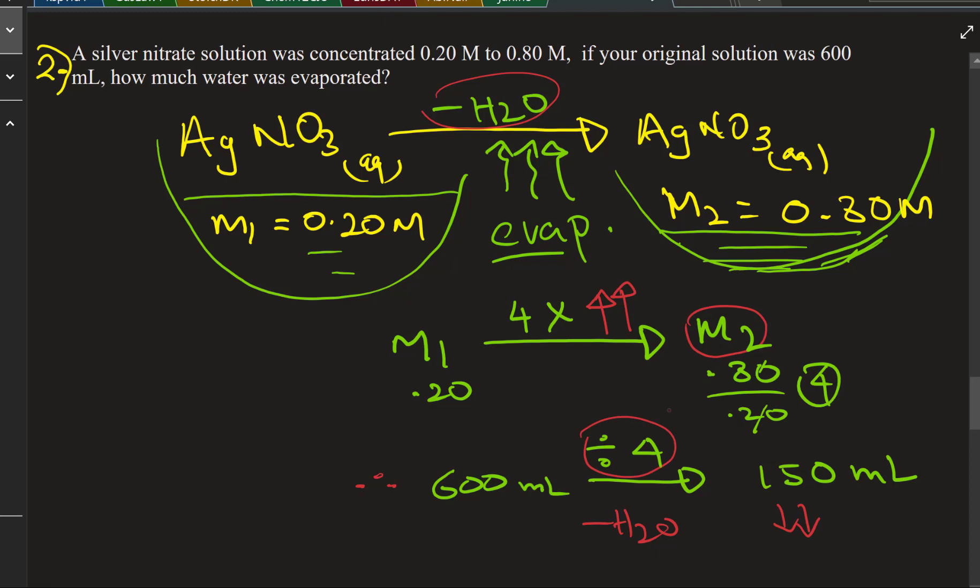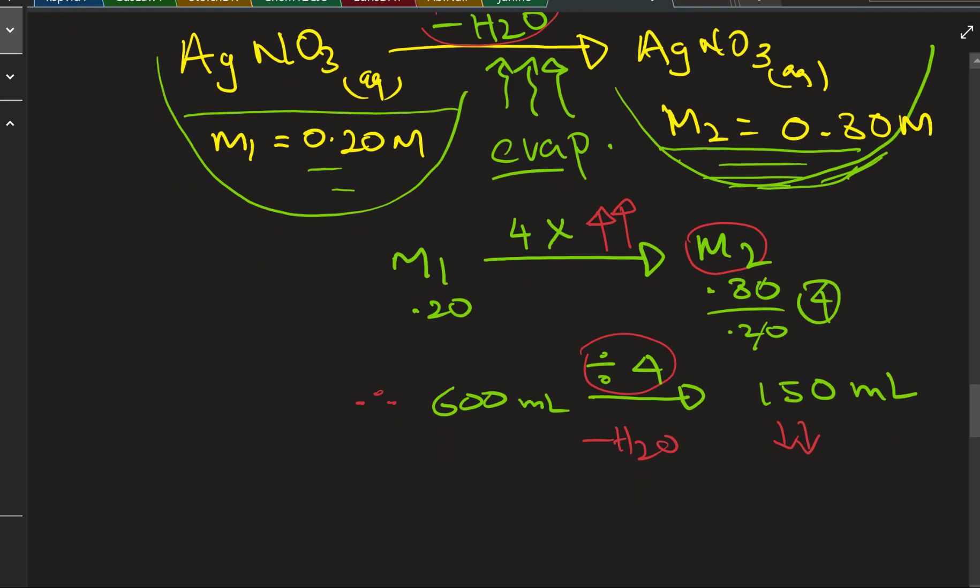That would be water milliliters. M2 is higher, so water is lost, minus water. That final volume is 150 milliliters lower because of the divide by 4. Even if you don't see this way, you can still use the formulas and solve the problem.